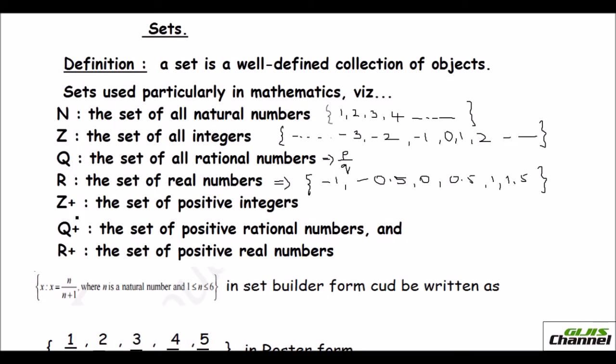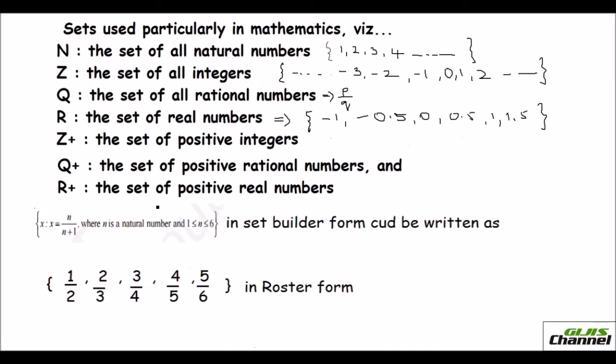And you have Z plus. These plus denotes positive numbers. You know already what is Z - the set of all integers. When you write Z plus, it is the set of all positive integers. And Q plus is positive rational numbers. And R plus is set of positive real numbers. So these are the commonly used variables in caps for representing the set.